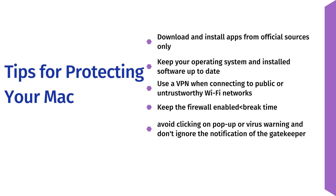2. Keep your operating system and installed software up to date — always make sure you download the latest update whenever you get an alert. 3. Use a VPN when connecting to public or untrustworthy Wi-Fi networks. A VPN hides your original IP address and replaces it with an IP address in a completely different location. This means hackers and websites cannot track your connection and find your exact location, which makes you semi-anonymous online. A VPN also encrypts your browsing data, so even if hackers can spy on you, they can't see what you're doing.